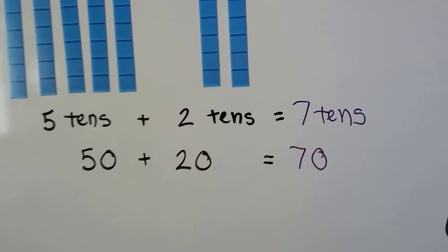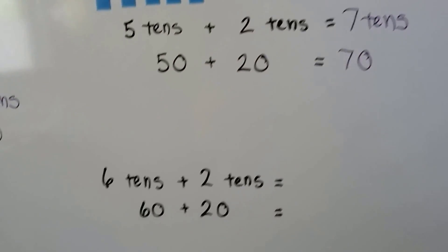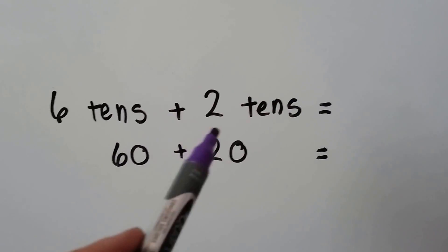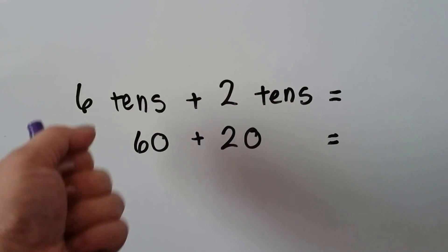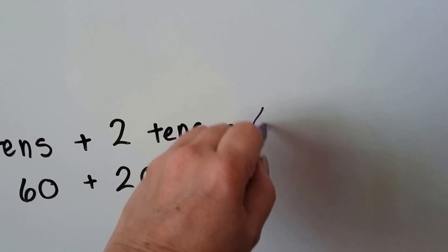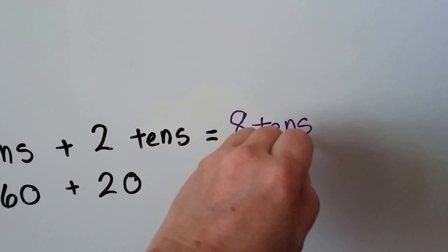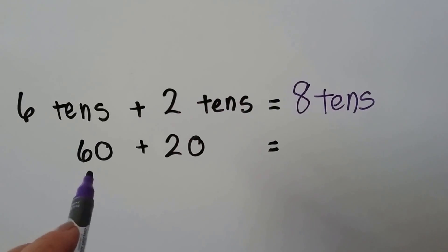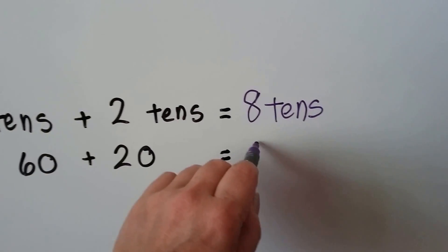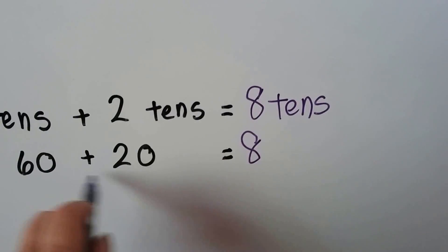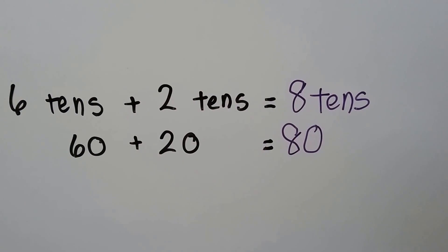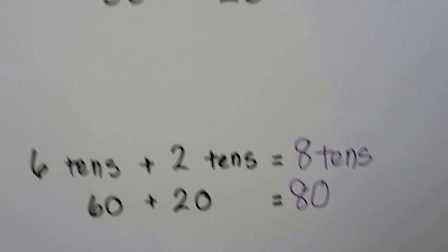We have a seven in the tens place. See if we can do it without the counters. We have six tens plus two tens. Six plus two is six, seven, eight. That would be eight tens. Sixty plus twenty. We add the six plus the two, which is an eight, and we have a zero in the ones place. Sixty plus twenty equals eighty.